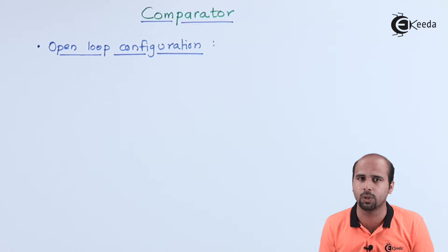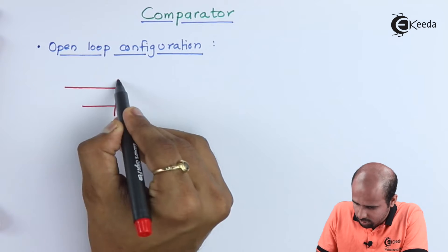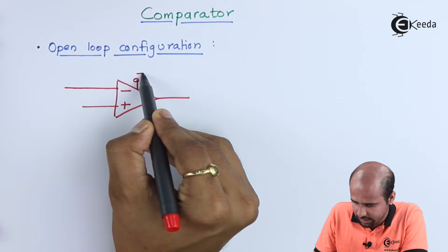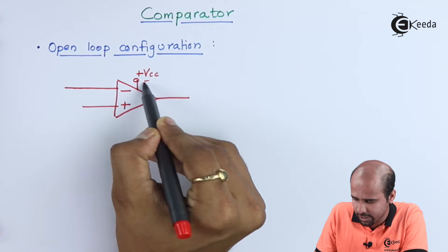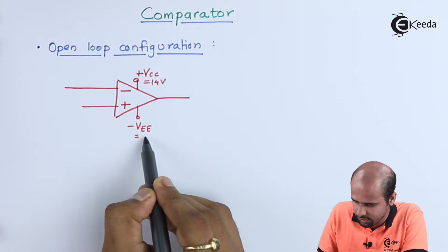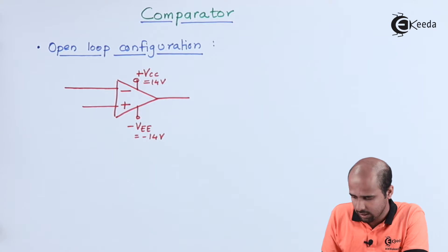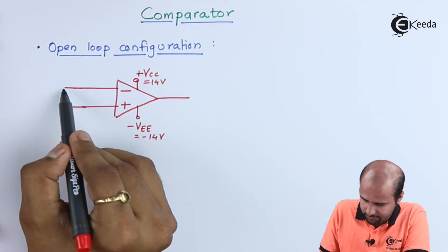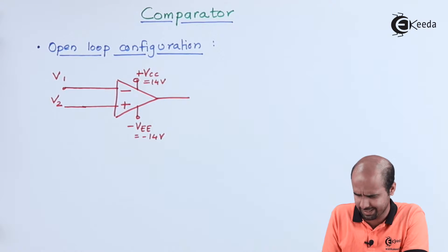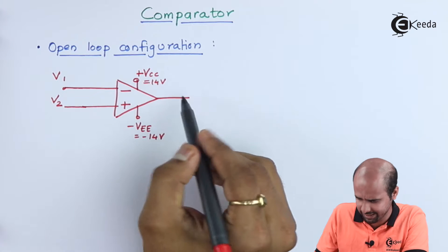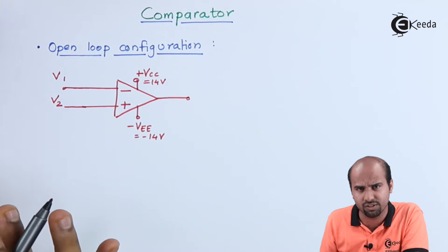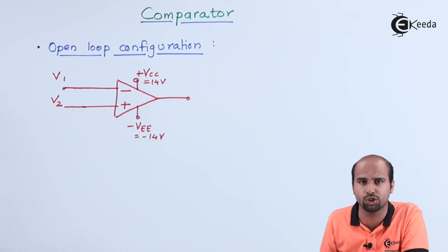We need to learn what happens at saturation. Suppose we give a positive supply voltage of plus Vcc equal to 14 volts and a negative supply of minus VEE equal to minus 14 volts. This is V1 and this is V2. The Comparator, with no feedback, produces an output at the saturation level. Looking at this circuit from the perspective of closed loop configuration, what will be the gain?